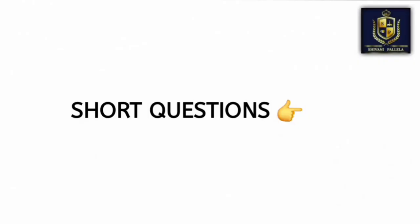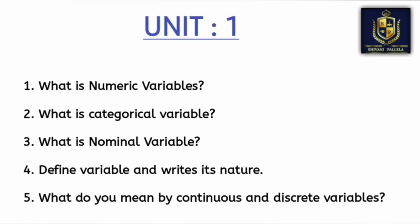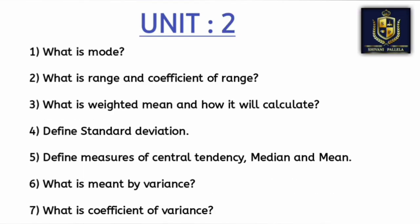Now we will discuss the short important questions which will be helpful for you to attempt the Part A questions. From unit number one, I have given five questions: nominal variable, numeric variable, variable and its nature. This is the most important question — try to learn what is meant by variable and the different types of variables. Understand the concept and try to write it in your own words; no need to mug up the answers from your material.